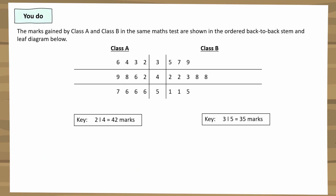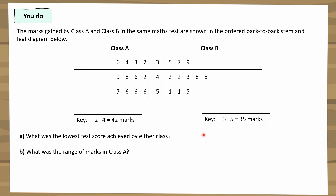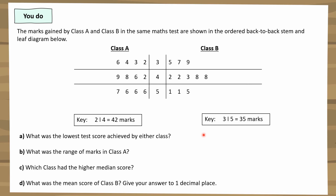Now here's one for you to try. The marks gained by Class A and Class B in the same maths test are shown in an ordered back-to-back stem and leaf diagram. Questions: a) what was the lowest test score by either class? b) what was the range of marks in Class A? c) which class had the higher median score? d) what was the mean score of Class B, to one decimal place? Pause the video and have a go.